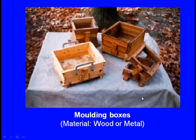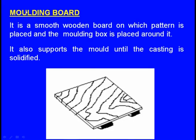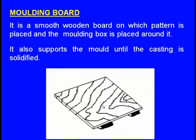First, the moulding box: generally made of wood, sometimes metal. We use two moulding boxes — the lower one is the drag and the upper one is the cope. Next, the moulding board: a smooth wooden board on which the pattern and moulding box are placed. It supports the mould until the casting is solidified.